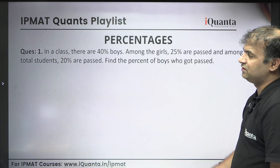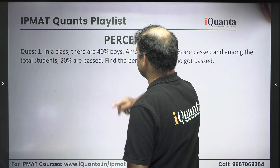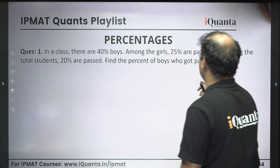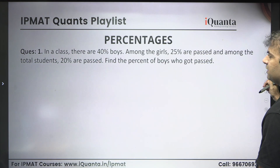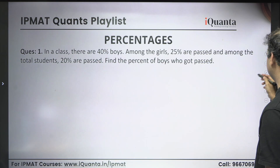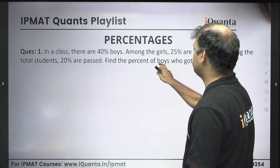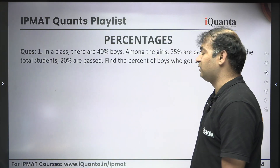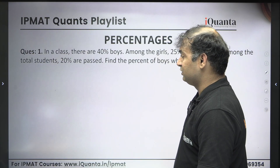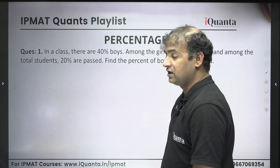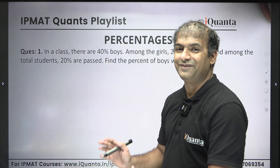This is question number one. It says that there is a class in which there are 40% boys. Among the girls, 25% got passed and among the total students, 20% have been passed. Now find the percentage of boys who have got passed. If you look at this question, they have not given any number.